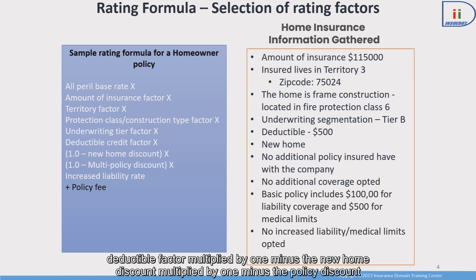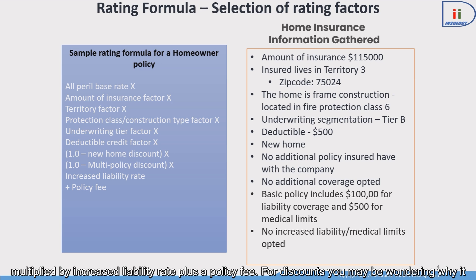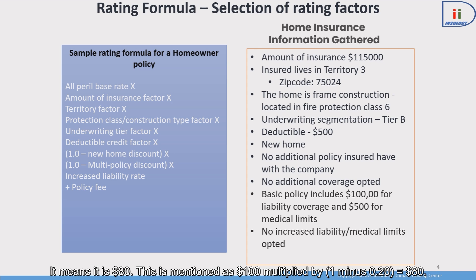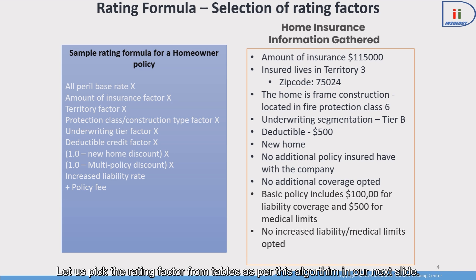For discounts, you may be wondering why it is mentioned as '1 minus.' For example, if $100 is the premium and the insurer is providing a 20% discount, it means it is $80. This is calculated as $100 × (1 − 0.20) = $80. Let us pick the rating factors from the tables as per this algorithm in our next slide.